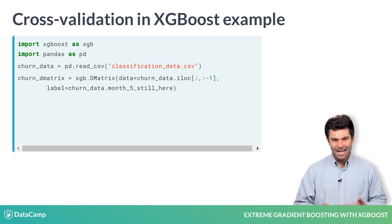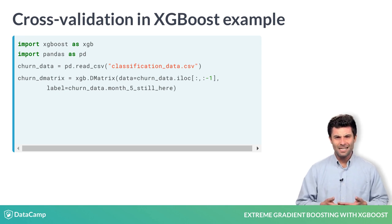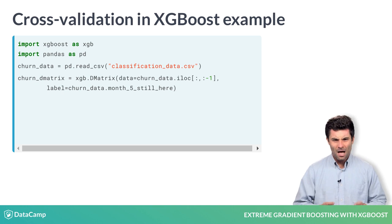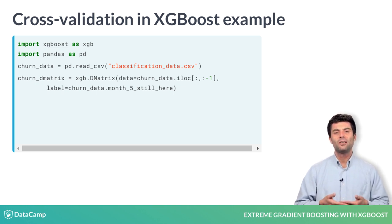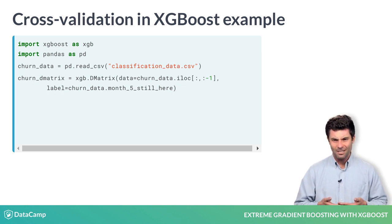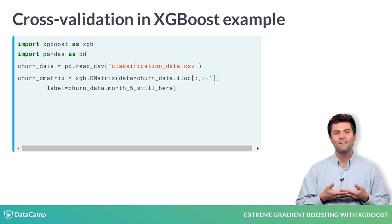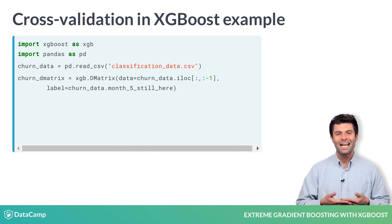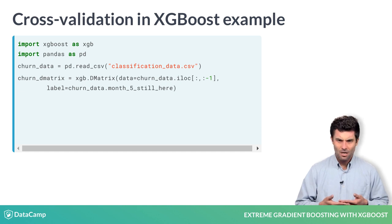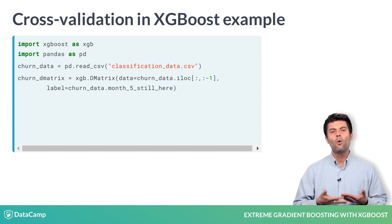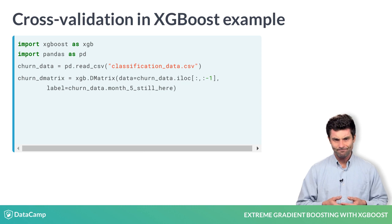In the previous exercise, the input data sets were converted into DMatrix data on the fly, but when we use the XGBoostCV object, which is part of XGBoost's learning API, we have to first explicitly convert our data into a DMatrix. So, that's what we are doing here before we run our cross-validation.